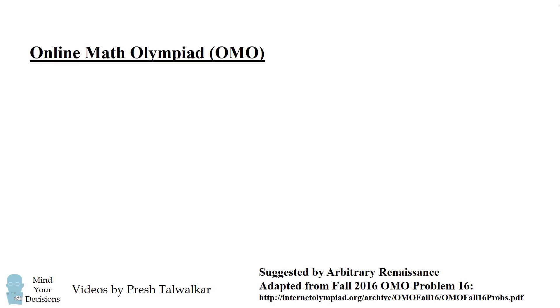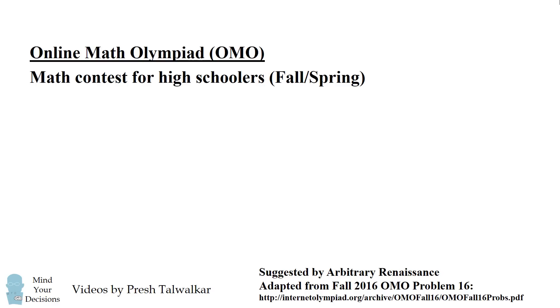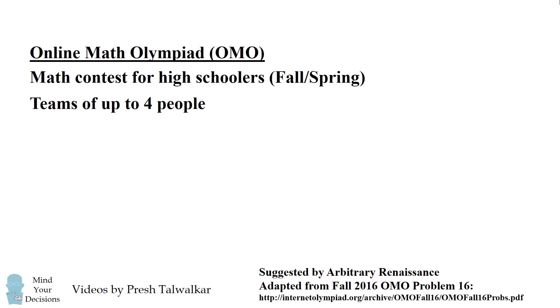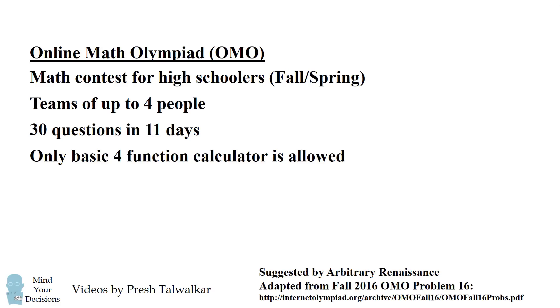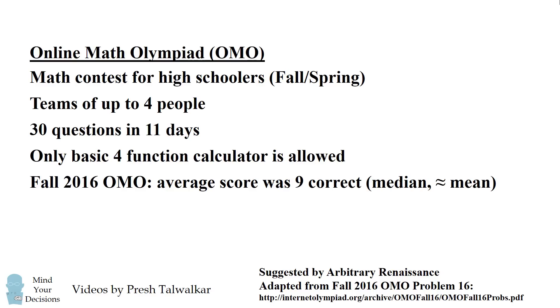Very often when people suggest problems to me, I reply back and ask for the context — where was the problem asked and what tools were expected to be used to solve it? This problem was asked in the fall 2016 Online Math Olympiad, a math contest for high schoolers offered in the fall and the spring. Teams of up to four people answer 30 questions in 11 days, and only a basic four-function calculator is allowed. Each question is worth one point, and the average score for this test was nine.